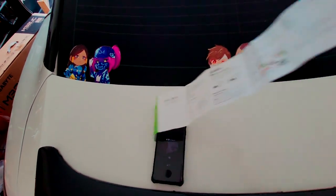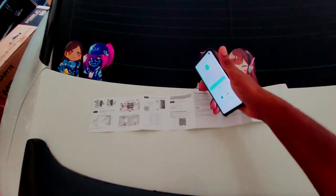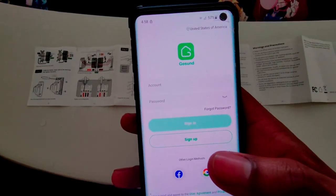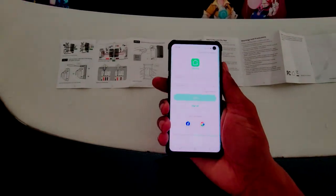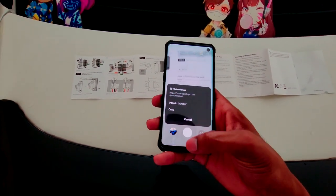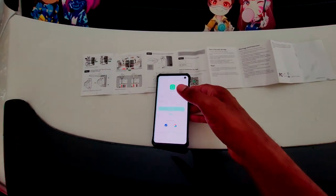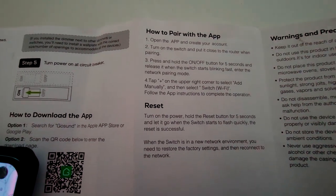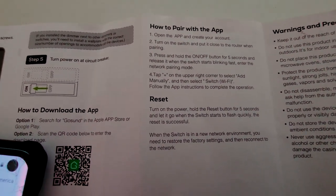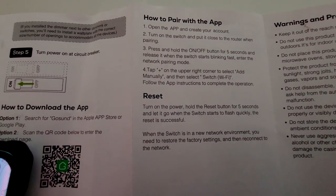So we're going to go to the part with the app. I'm going to use my second phone. I already have the app installed. You can search it up, it's called GoSound. You can search it up on the Apple App Store or the Google Play Store. Or open your camera, it's gonna pop up right there. You're gonna connect the app, make your account. Open the app, create your account, turn on the switch and place it close to the router. If you have a Wi-Fi extender that might be beneficial. Press and hold the power button for five seconds, release it, and there you have it.